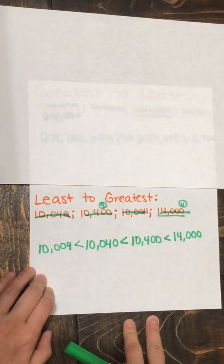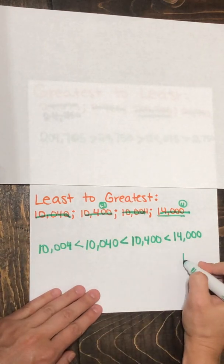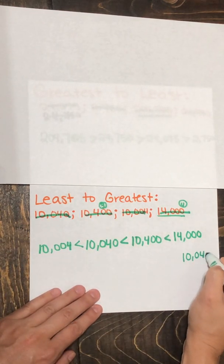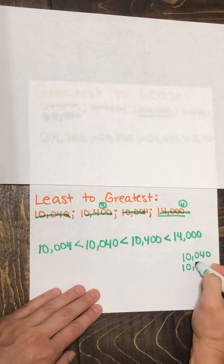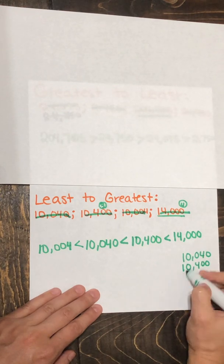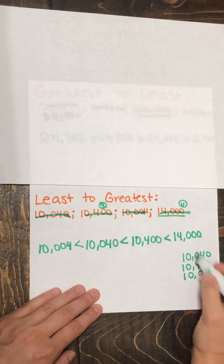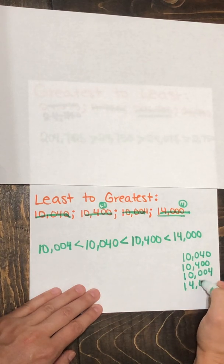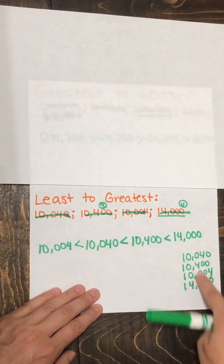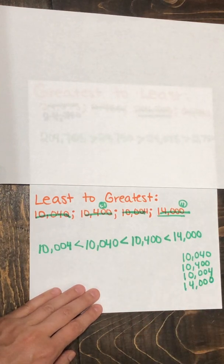Another strategy you could use is line up all these numbers vertically. 10,040, 10,400, 10,004, and 14,000. This may help you compare the places a little easier.